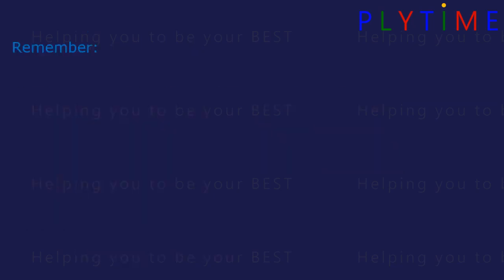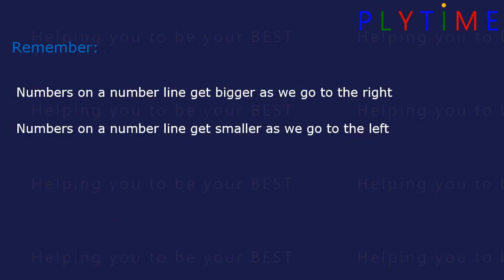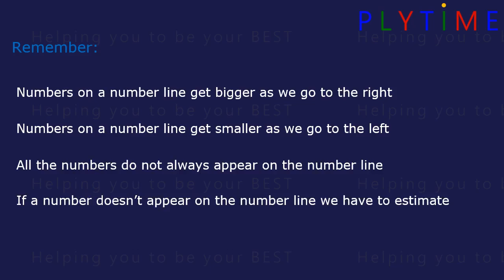Remember, numbers on a number line get bigger as we go to the right. Numbers on a number line get smaller as we go to the left. All the numbers don't always appear on the number line. If a number doesn't appear, we have to estimate where it would be on the number line. And always check the scale on the number line.